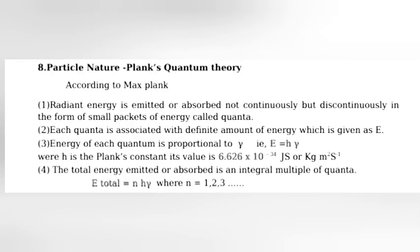Particle nature: Planck's quantum theory. According to Max Planck, radiant energy is emitted or absorbed not continuously but discontinuously in the form of small packets of energy called quanta. Each quanta is associated with definite amount of energy which is given as E equals hν. Energy of each quantum is proportional where H is the Planck's constant. Its value is 6.626 x 10 raised to minus 34 Joule-seconds. Total energy emitted or absorbed is an integral multiple of quanta.